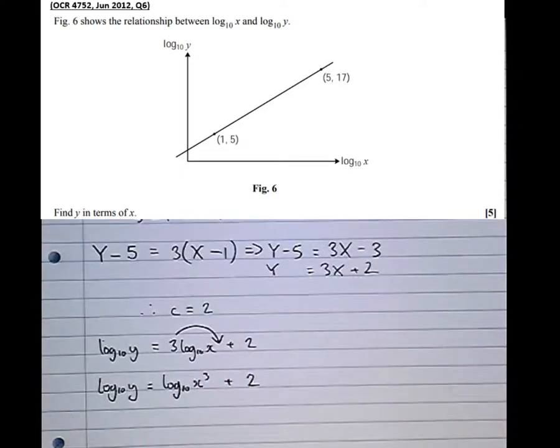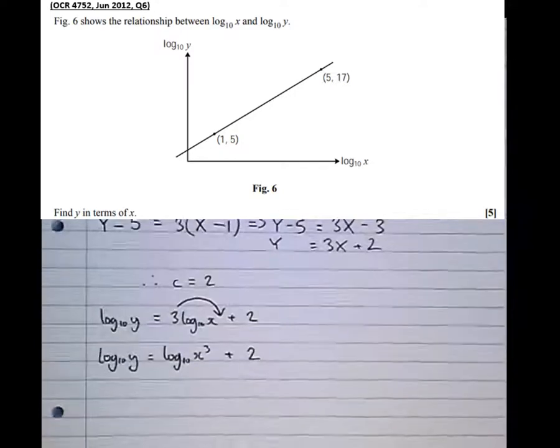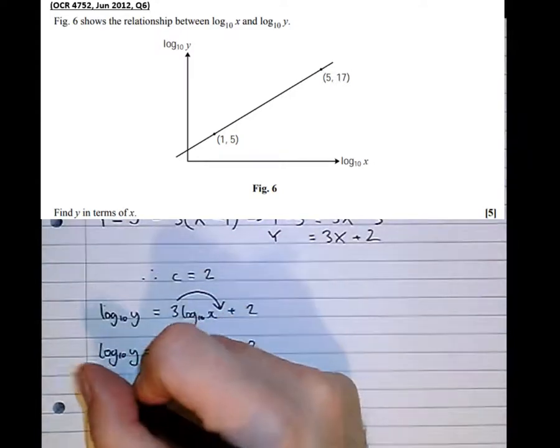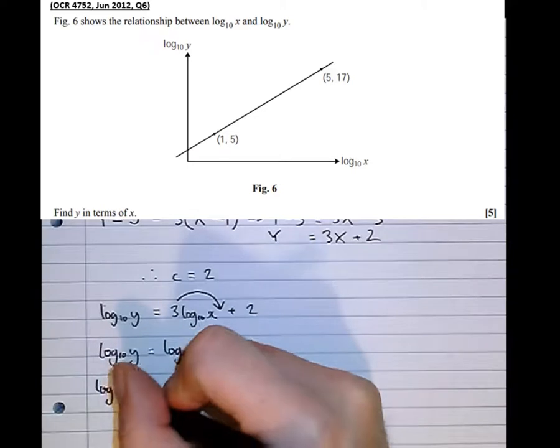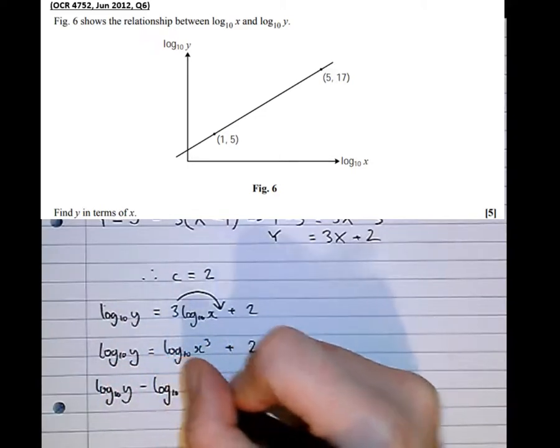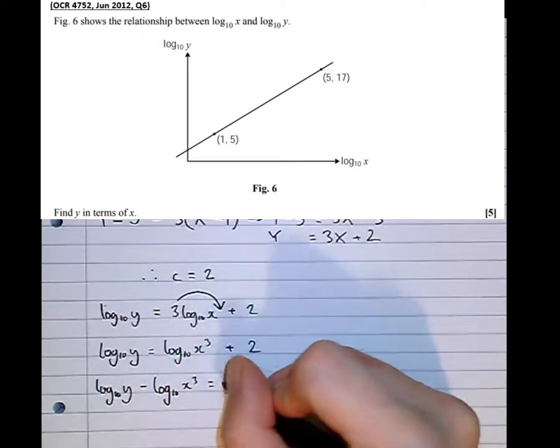So I want to unlog now, but in order to do that, it's best to have a single term on each side. So what I can do is take this log to the base 10 of x cubed across to the other side to make it into a single logarithm. So log to the base 10 of y minus log to the base 10 of x cubed equals 2.